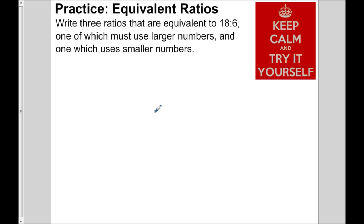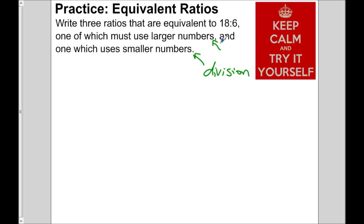Here's an open-ended question. Write three ratios that are equivalent to 18 to 6 — one of which must use larger numbers and one which uses smaller numbers. You can create smaller numbers by using division, because that's the cousin of multiplication. At least one ratio uses larger numbers via multiplication, and another uses smaller numbers via division. Pause the video, give it a shot, and press play when you're ready to check your work.